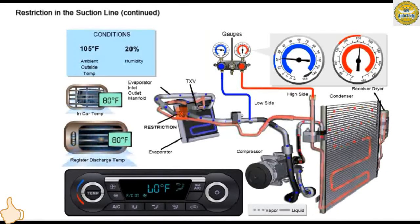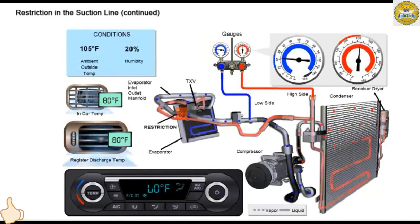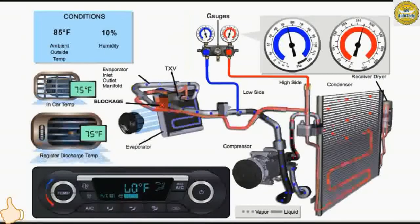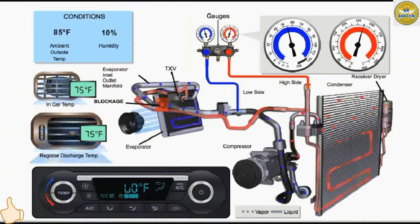When ambient temperature is 41 degrees Celsius (105 degrees Fahrenheit) and relative humidity is between 10 and 40%, the high side gauge will read between approximately 260 PSI and 175 PSI. Low side pressure will be below approximately 25 PSI. If the suction hose is blocked downstream of the service port, the low side pressure will read high, even though the compressor is destroking.